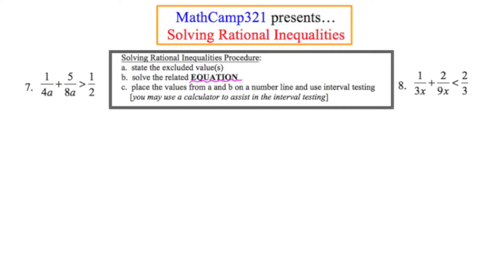Let's look at number seven. We have a rational inequality, and in part A we're supposed to state the excluded values. The values I'm going to exclude are what make the denominator zero. Looking at the denominators — 4A, 8A, and 2 — the value I need to exclude is zero, because if A were zero, you'd have a problem. So A cannot equal zero.